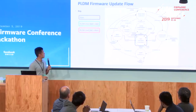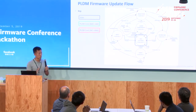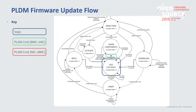Initially both BMC and device are in idle state. BMC sends a command to the device to request an update. At any state, both sides can cancel the upgrade — BMC simply sends a cancel command, while the device cancels by returning an error code in response to any BMC command. This returns both sides to idle state.